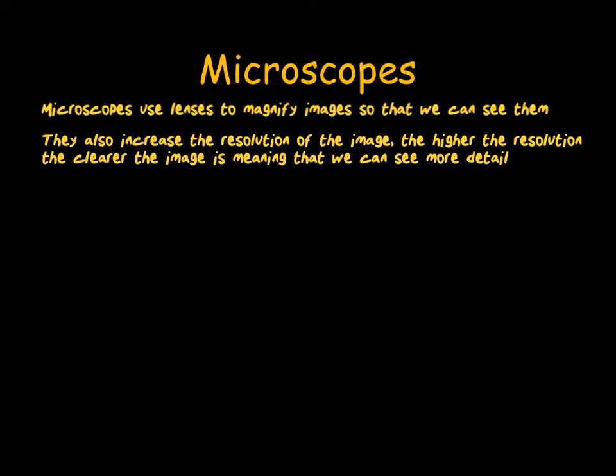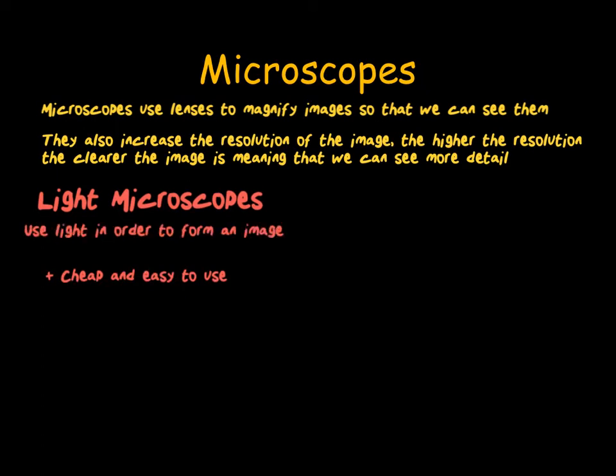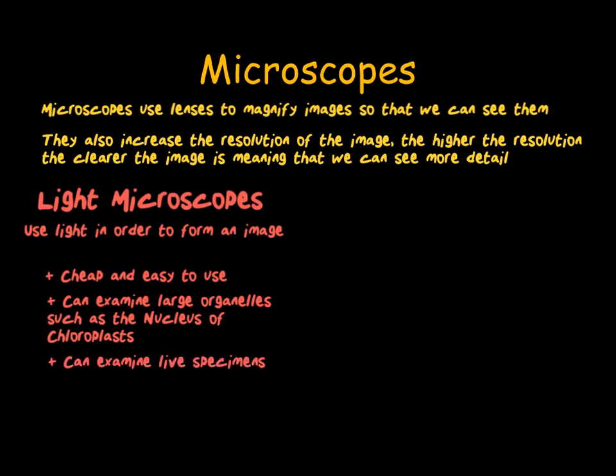There are two types of microscope that you need to know about: light microscopes and electron microscopes. Light microscopes are the ones you'll use at school. They are very cheap and easy to use. They work by passing light through the specimen. This means that we can observe living organisms, such as the water flea Daphnia, where we can observe its heart rate directly under the microscope. We can use light microscopes to observe large organelles, such as the nucleus or chloroplasts. The magnification isn't that strong and the resolution isn't too large.